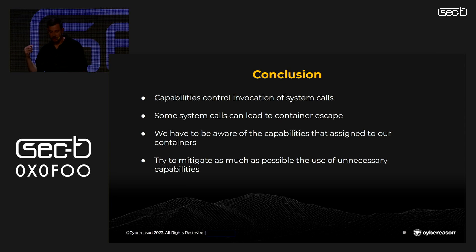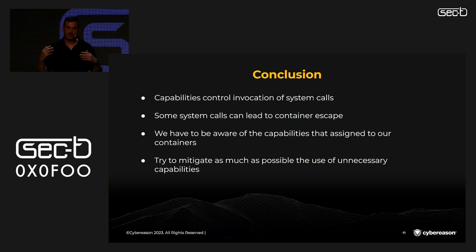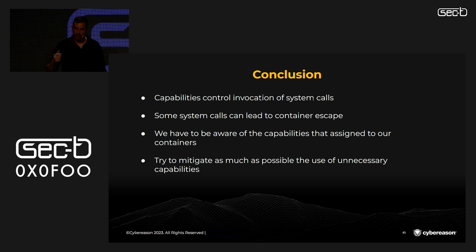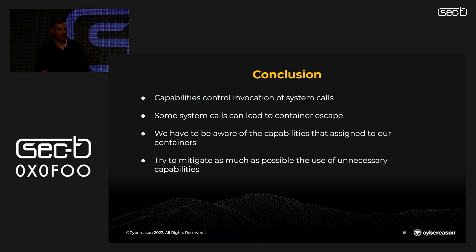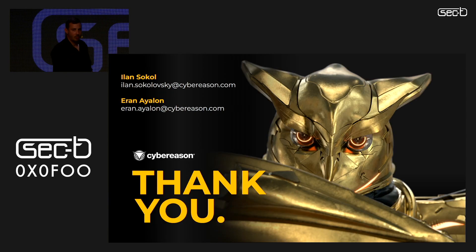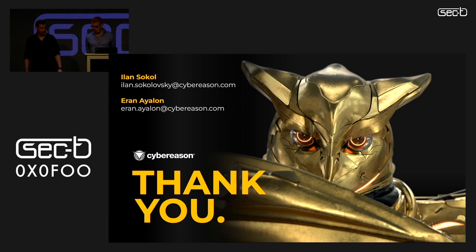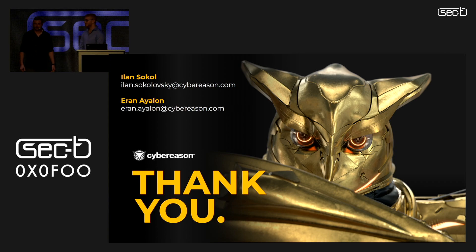To conclude: capabilities control the invocation of system calls, and some system calls are directly associated with capabilities. All capabilities combined together are considered as root privilege. Some of those system calls can lead to a container escape, as we saw in the demonstrations. We must be aware of the capabilities assigned to our containers, use the mitigation processes shown, and mitigate unnecessary capabilities as much as possible. Drop all capabilities first and add only the relevant ones. Thank you — we hope you enjoyed our talk.